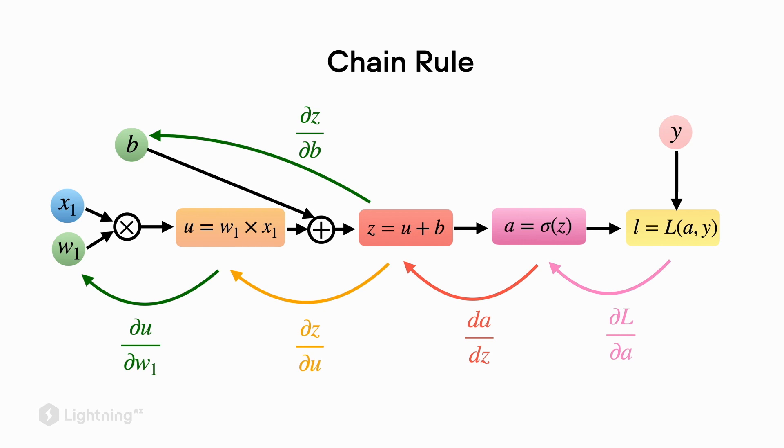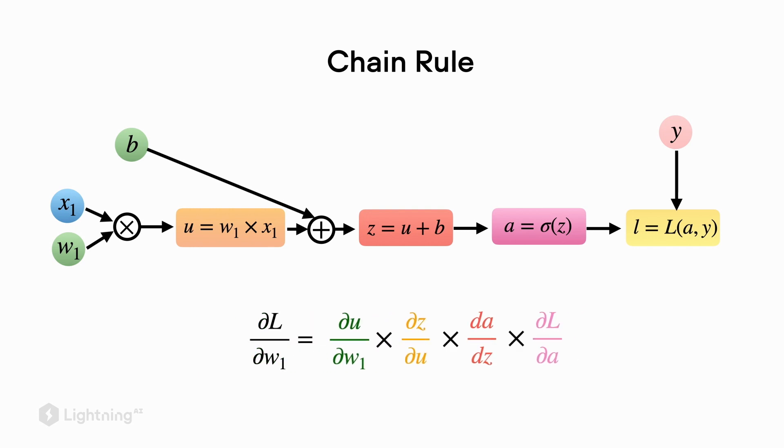Now using the chain rule we can combine all these partial derivatives and obtain the partial derivative of the loss with respect to the weight w1, which is essentially what we want in order to compute the slope of the loss function with respect to our model parameter.